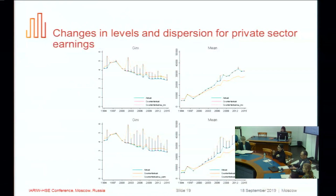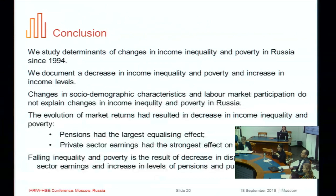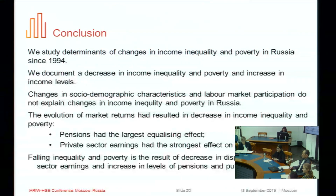In conclusion, in this paper we study the determinants of changes in income inequality and poverty in Russia. We documented a decrease in income inequality and an increase in income levels, and we explain why. Changes in socio-demographic characteristics and labor market participation do not explain changes in income inequality, but they resulted in a decrease in income levels. The evolution of market returns resulted in a decrease in income inequality and poverty. Pensions had the largest equalizing effect on inequality and poverty, and private sector earnings had the strongest positive effect on income levels. Falling inequality and poverty is a result of decreasing dispersion of private sector earnings and increasing levels of pensions and public sector earnings.